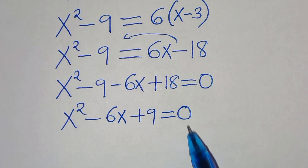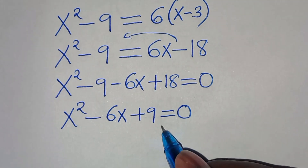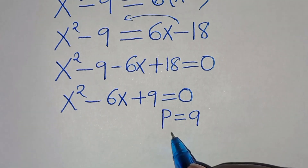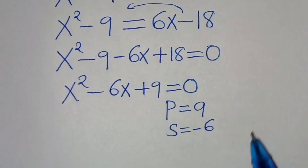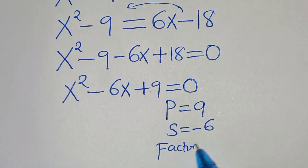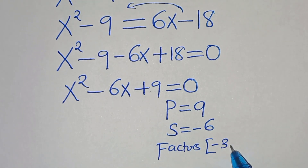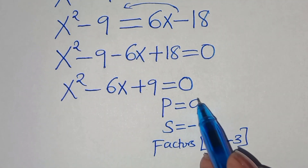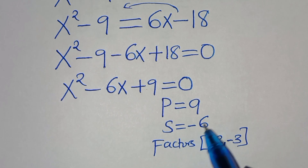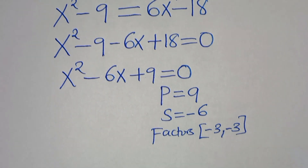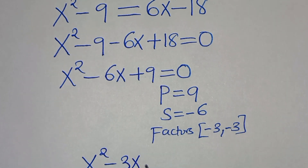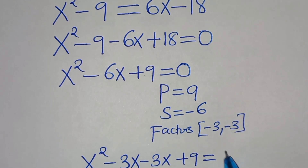This is a quadratic equation. We can solve it by applying the factorization method. The product is equal to 9 and the sum is equal to minus 6. The two factors are minus 3 and minus 3, since minus 3 times minus 3 is 9, and minus 3 plus minus 3 is minus 6. Substituting these factors: x squared minus 3x minus 3x plus 9 equals 0.